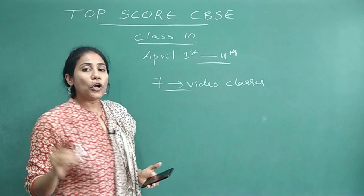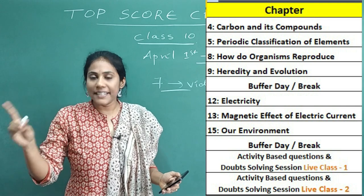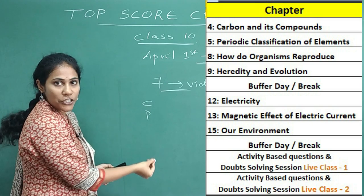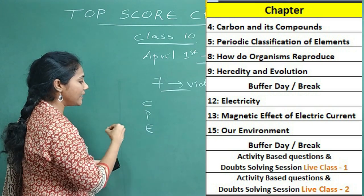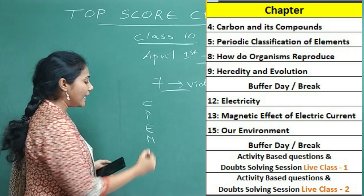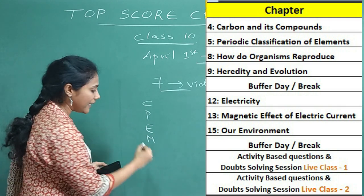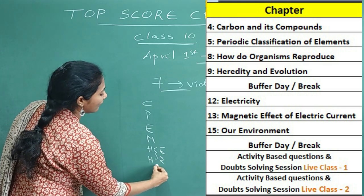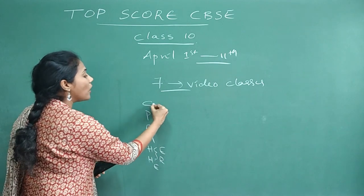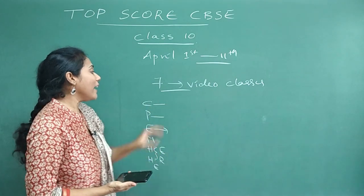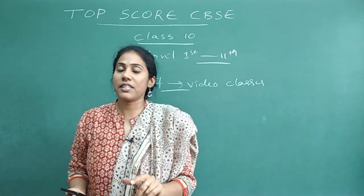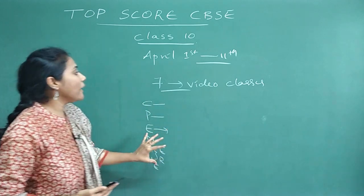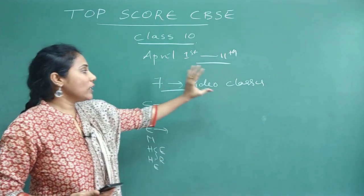You have seven chapters for Term 2 Science: Carbon and Its Compounds, Periodic Classification of Elements, Electricity, and Magnetic Effect of Electric Current. From Biology, you have Heredity and Evolution, How Do Organisms Reproduce, and Our Environment. Each chapter has a revision video with detailed explanation of all concepts.